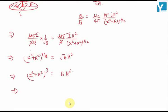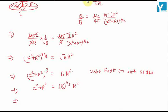Taking cube root on both sides, we will get x square plus R square equals 8 raised to power 1 by 3 R square. This implies x square plus R square equals 2 R square.